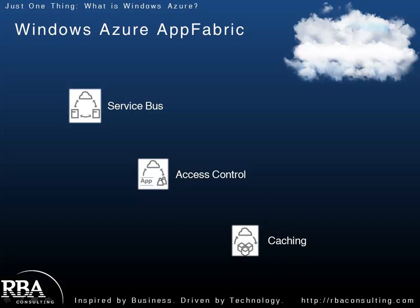Finally, the latest addition to App Fabric is the caching service. One of the ways to create really great applications is to make them fast, or appear to be fast, and one way you do that in a web environment is through caching — so applications don't always have to go directly to the data source for commonly accessed data. In a cloud environment, caching is a little different in that you don't want to cache directly on the hardware. So caching gives you a distributed in-memory cache that goes across all instances of a given website or worker role, giving you great performance without having to manage your own cache.